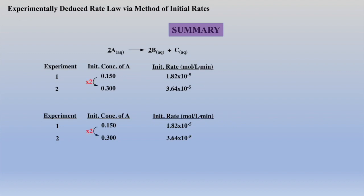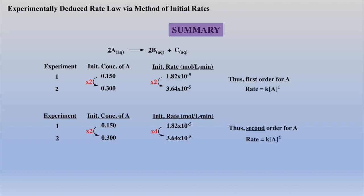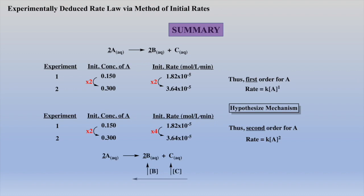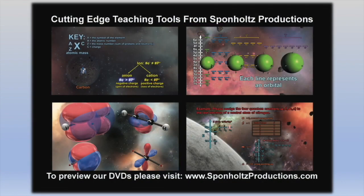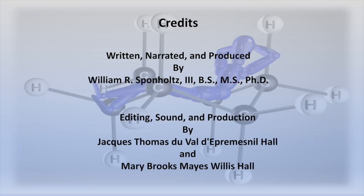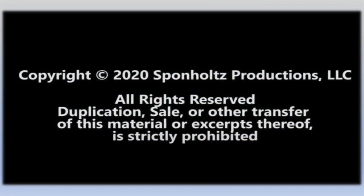In summary, the method of initial rates is simply to change the concentration of a reactant while keeping the concentration of other reactants constant, if necessary, and observe how the initial rate is affected. This allows the experimentalist to deduce the order of that reactant, which affords the rate law. As we mentioned previously, we will use the experimentally determined rate law to hypothesize a mechanism in future reviews. In addition, it is important to note that once product concentrations begin to increase, reverse reactions may occur. Thus, we study the reaction when the reverse reaction can be neglected, so that the reaction rate will only depend on the concentration of the reactants.